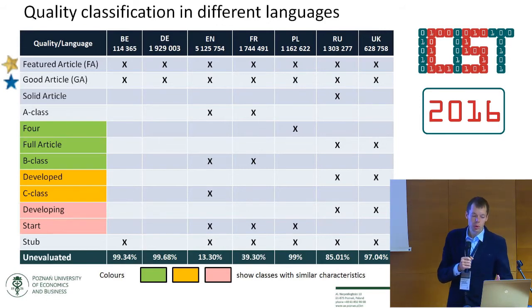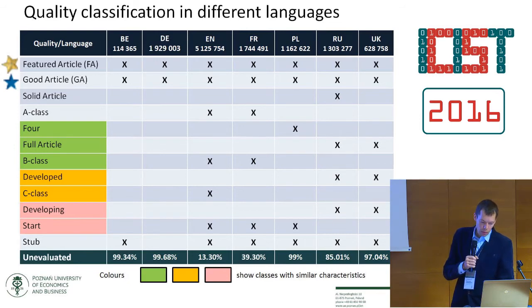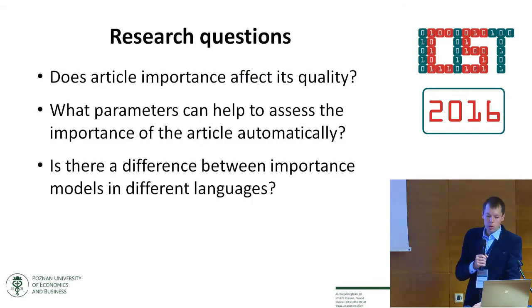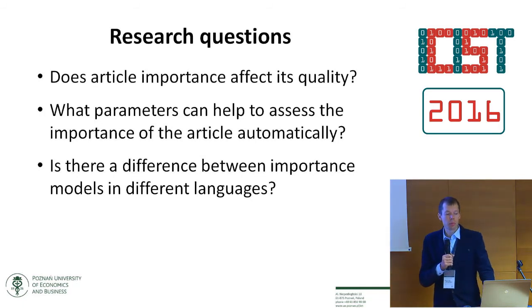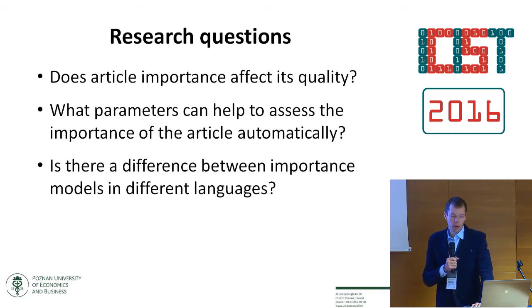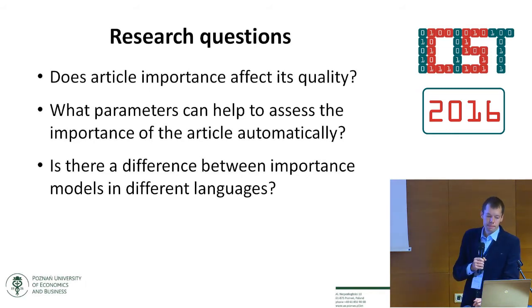We don't know if they are good or not. In this work we try to answer three questions: Does article importance affect its quality? What parameters can help to assess the importance of an article automatically? And is there a difference between importance models in different languages?